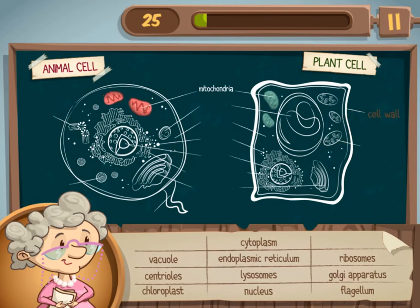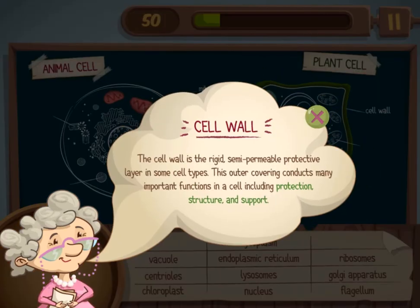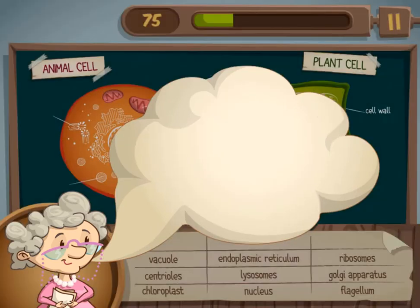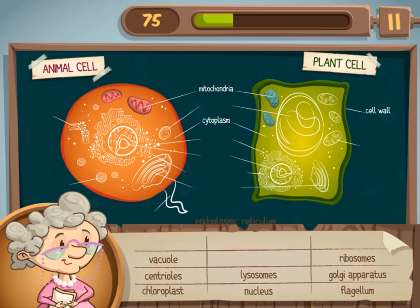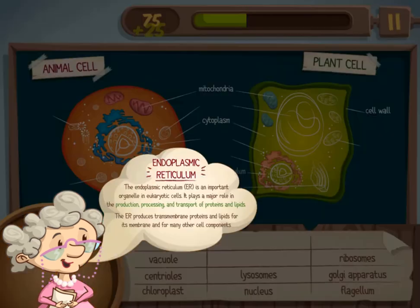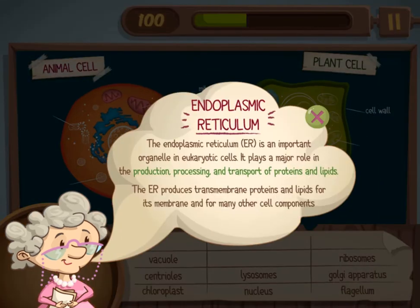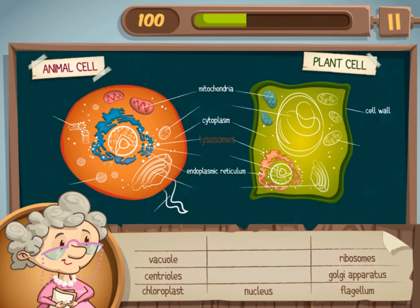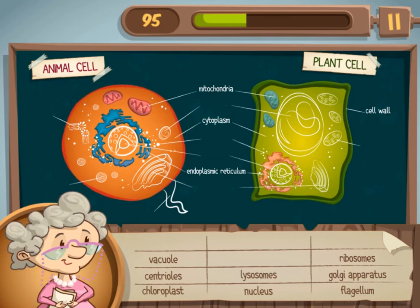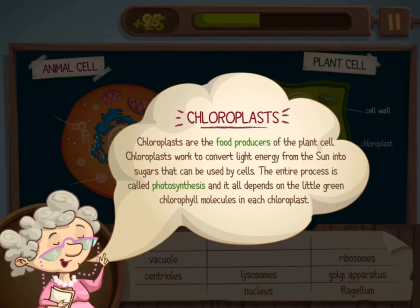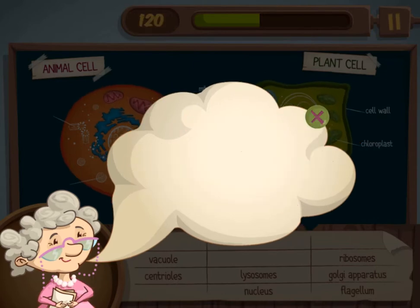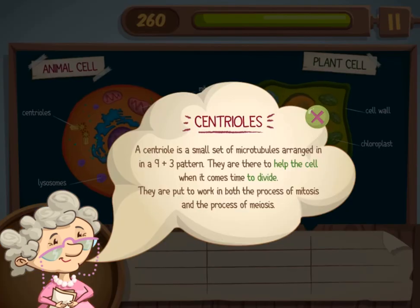You will be asked to label a plant or animal cell by dragging and dropping the correct label to the different parts on the diagram. For each correct answer you will receive points and gain knowledge by reading about the part of the cell that you have selected correctly. Mrs. Daisy will test your knowledge by requiring you to click on either the plant or animal cell to find 6 differences between them.